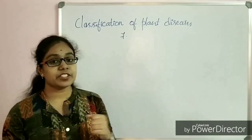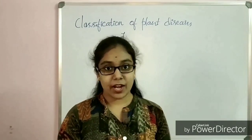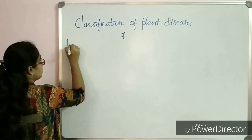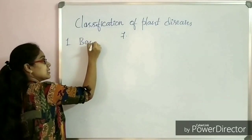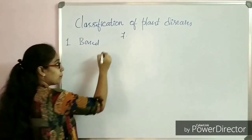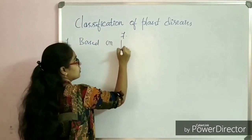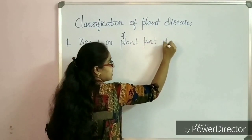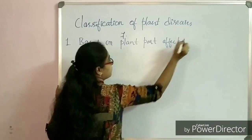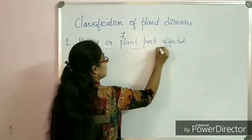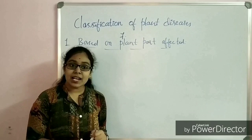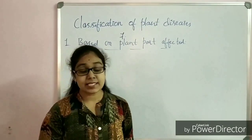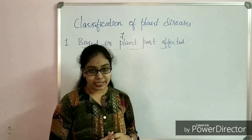The very first category under which plant diseases are classified is based on the part affected. In this category, plant diseases are classified into two types: the first one is localized plant diseases, and secondly, systemic plant diseases.